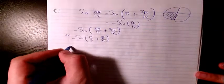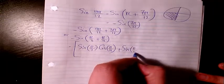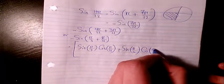We can say negative, it's going to be sine pi over 3 times cosine pi over 4 plus sine pi over 4 times cosine pi over 3.